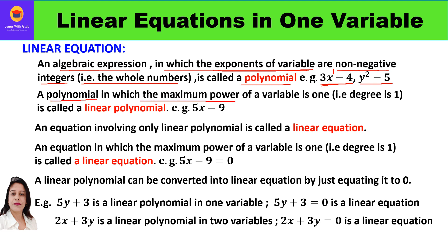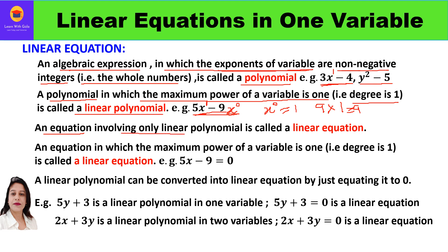Now what are linear polynomials? A polynomial in which the maximum power of the variable is 1, that is the degree is 1, is called a linear polynomial. For example, 5x minus 9: here x is the variable with power 1. The constant 9 has x raised to power 0, which equals 1, so it doesn't affect the degree. The highest power is 1, so this is a linear polynomial.